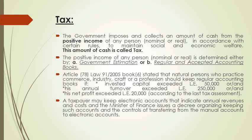Regular and accepted accounting books, according to the tax law, will be kept if one of three conditions occur: first, the investing capital exceeded £50,000; second, the yearly turnover exceeded £250,000; or third, the net profit exceeded £20,000.